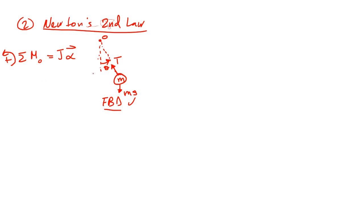For the moment equation, the tension is ignored because it is always directed toward the origin O — it produces no moment. We only have a moment from the weight. The moment arm from O to the line of action of mg is L sine theta. This moment is negative because it opposes the motion — it acts against the degree of freedom theta. So: minus MGL sine theta equals J_O times theta-double-dot.